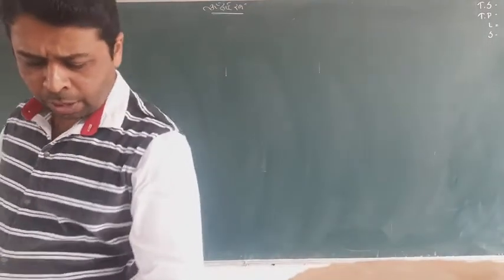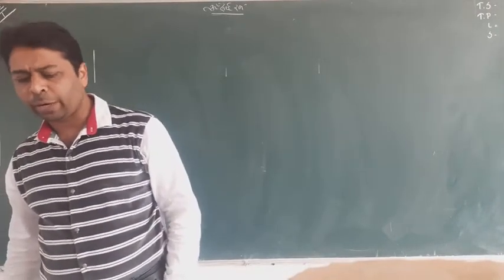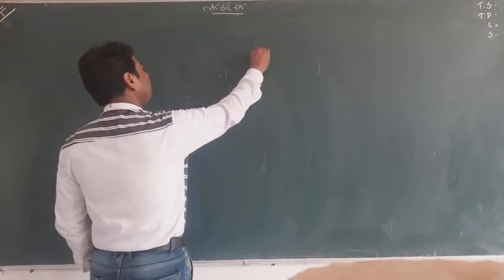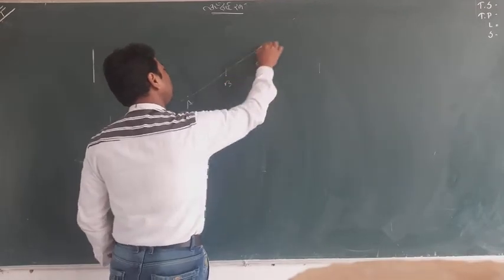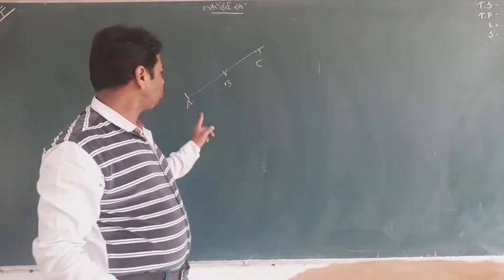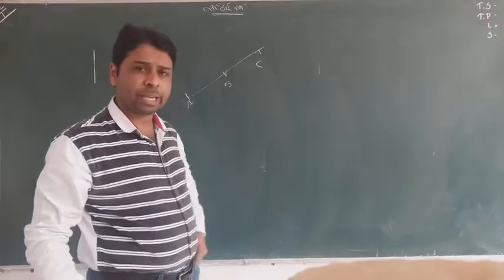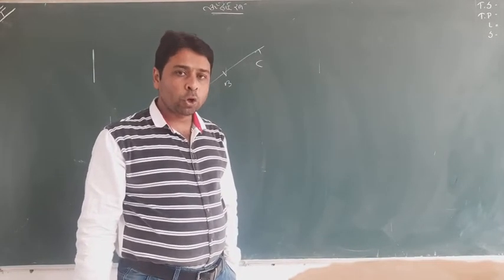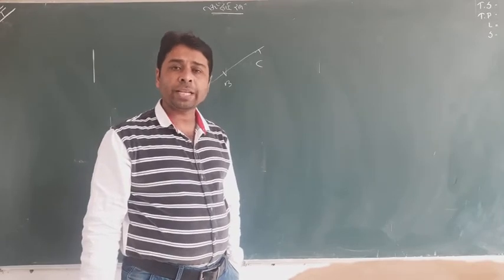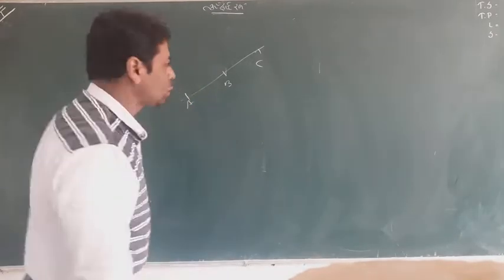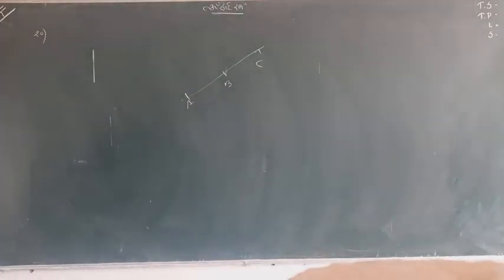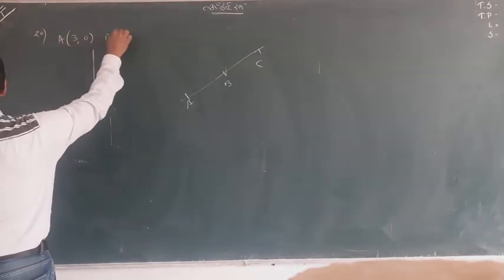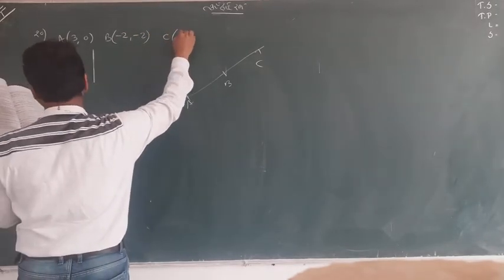Question 20 says: by using the concept of equation of a line, prove that 3 points are collinear. The three points are A(3, 0), B(-2, -3), and C(8, 2). To show they are collinear, I will find the slopes of AB and BC.